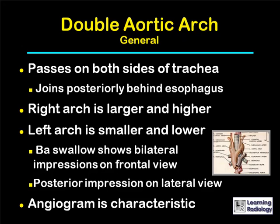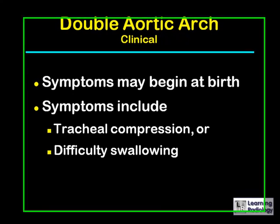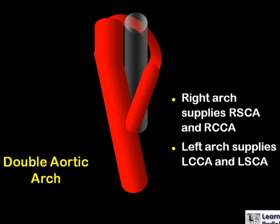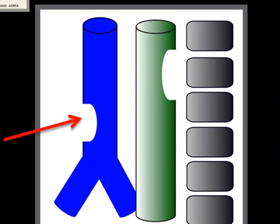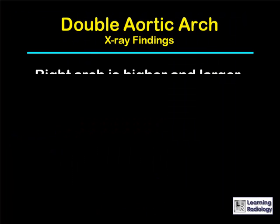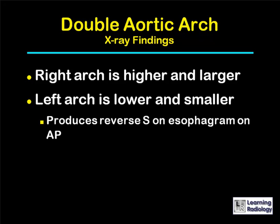An angiogram is characteristic. Symptoms from a double aortic arch may begin at birth and include tracheal compression or difficulty swallowing. The right-sided arch usually gives rise to the right subclavian artery and right common carotid artery; the left arch to the left subclavian artery and left common carotid artery. A double aortic arch produces a posterior impression on the esophagus and an anterior impression on the trachea. The right arch is usually higher and larger than the left, producing a reversed S sign on the esophagram in the AP projection.